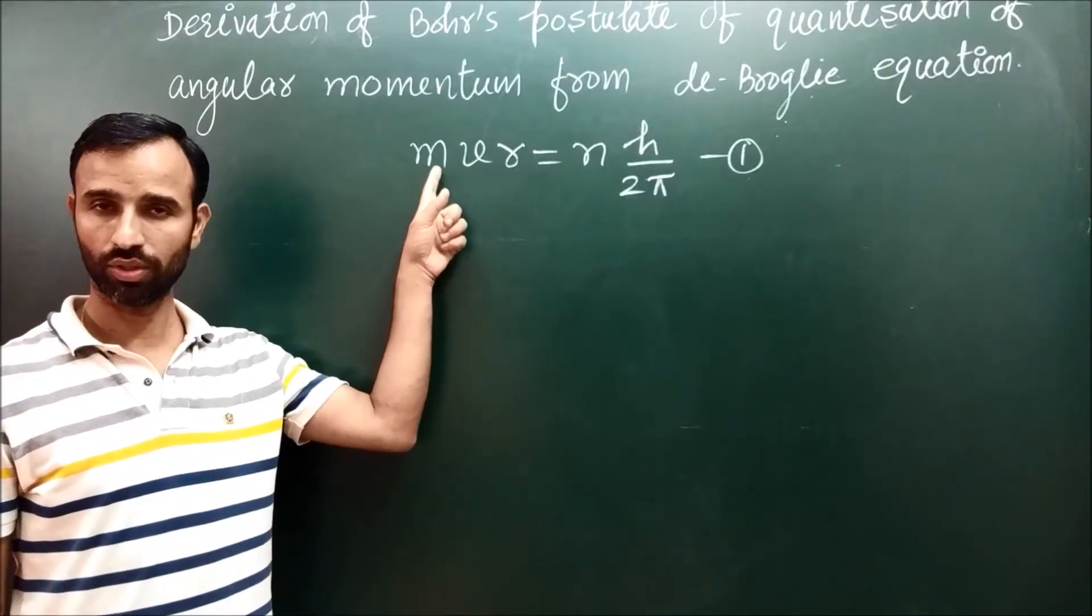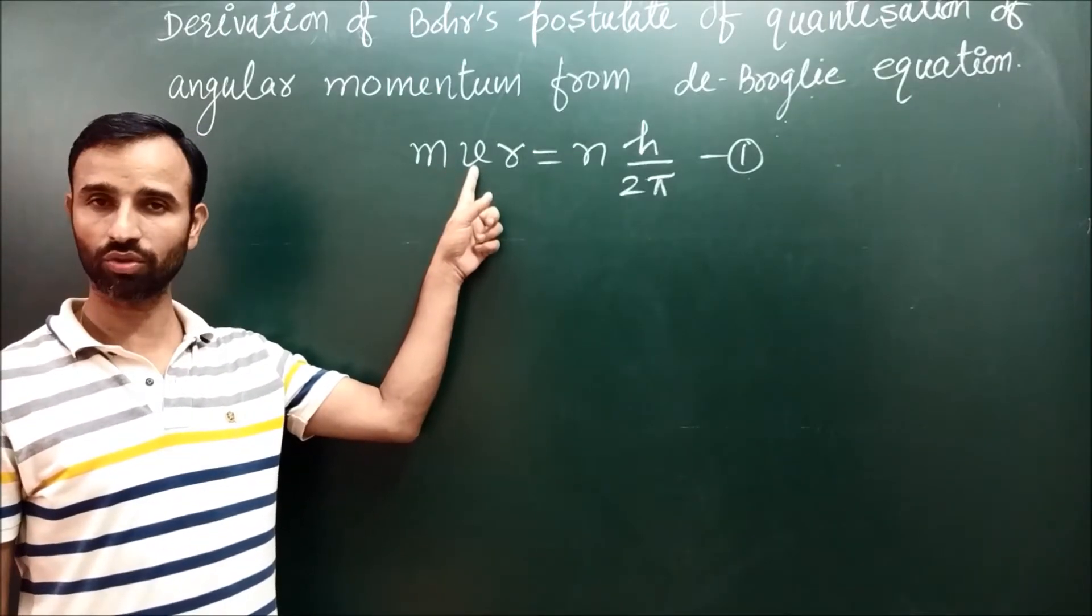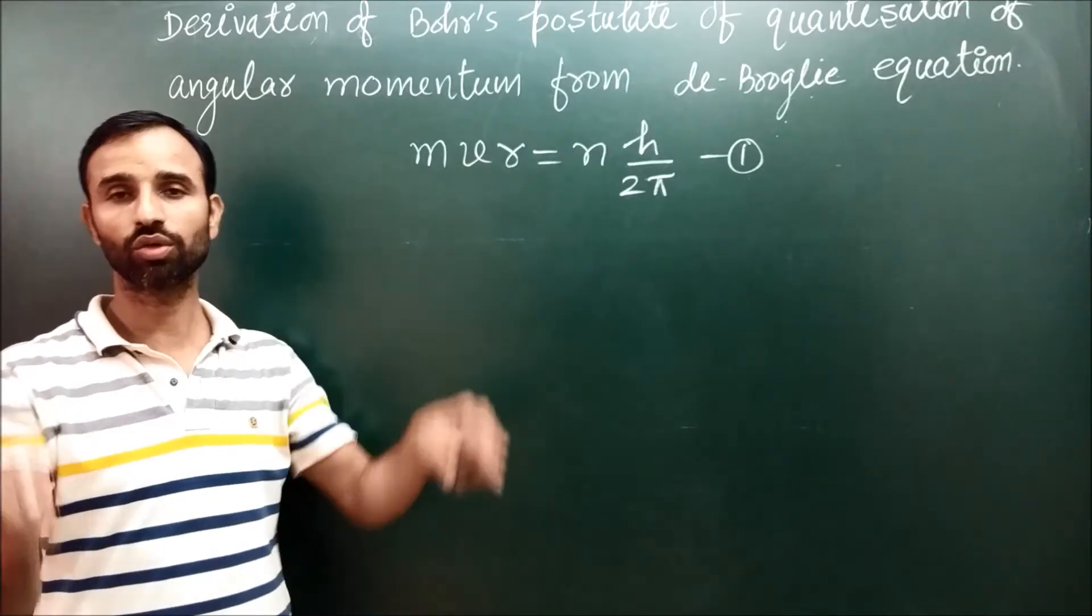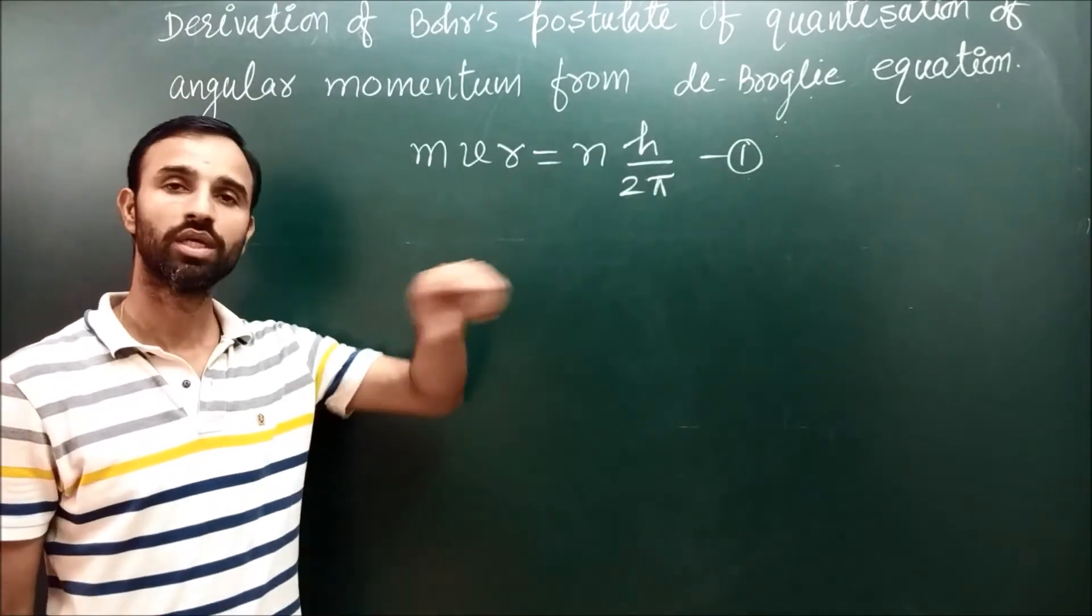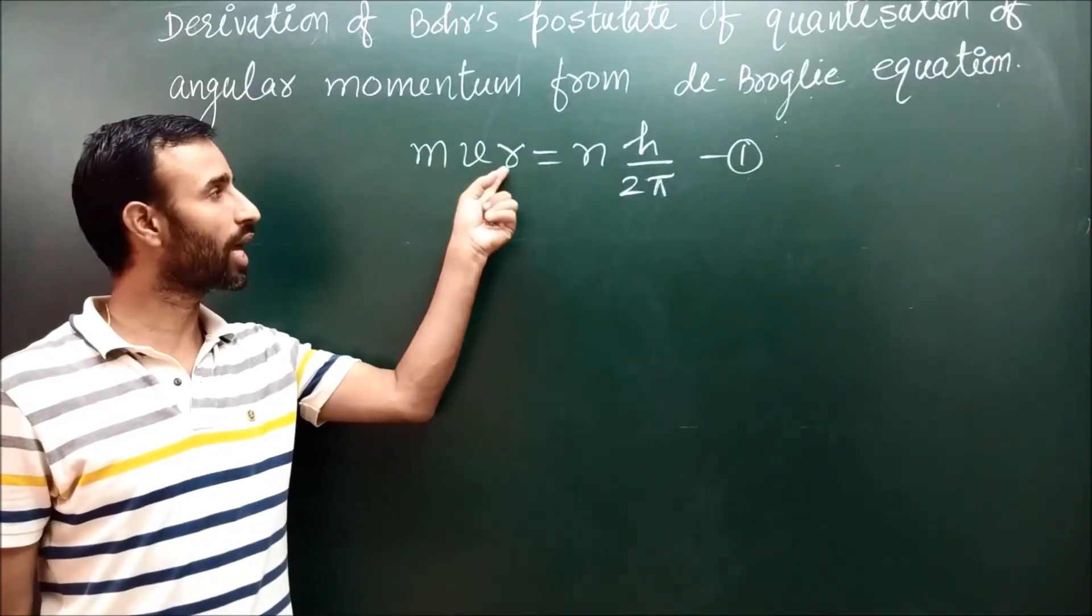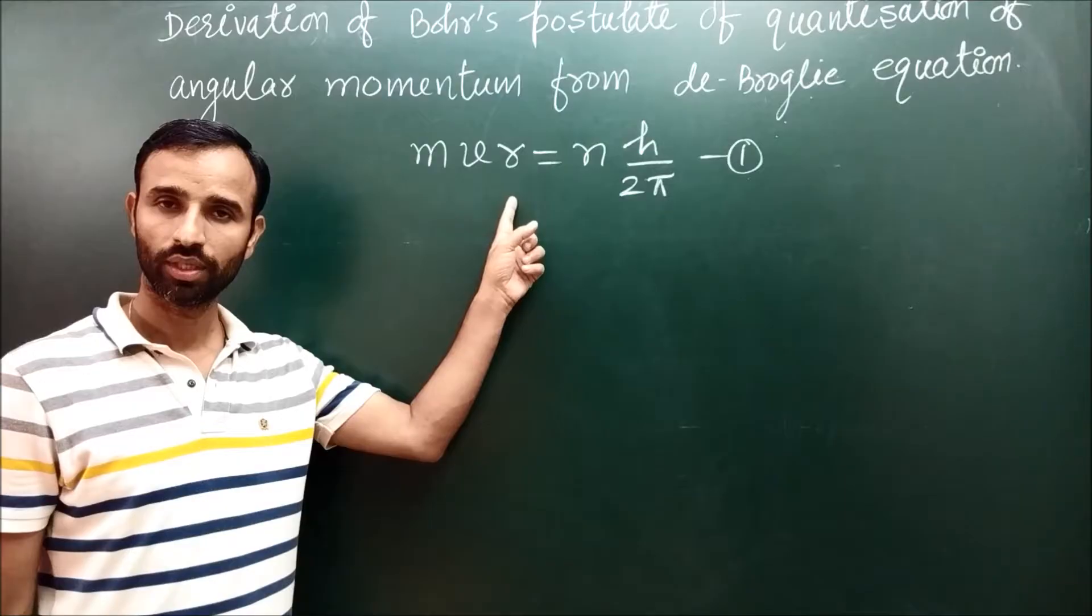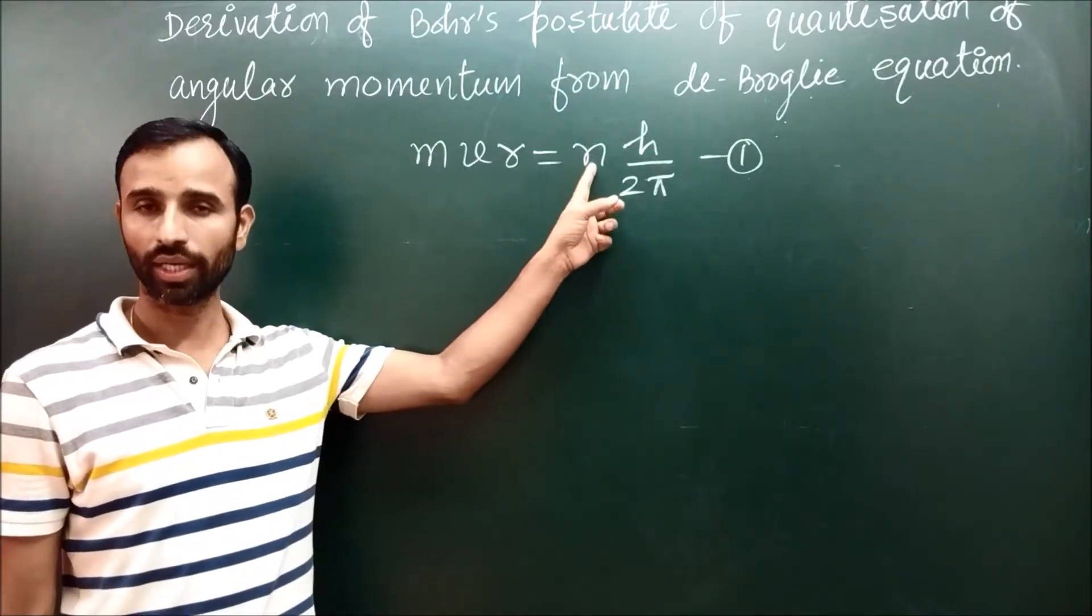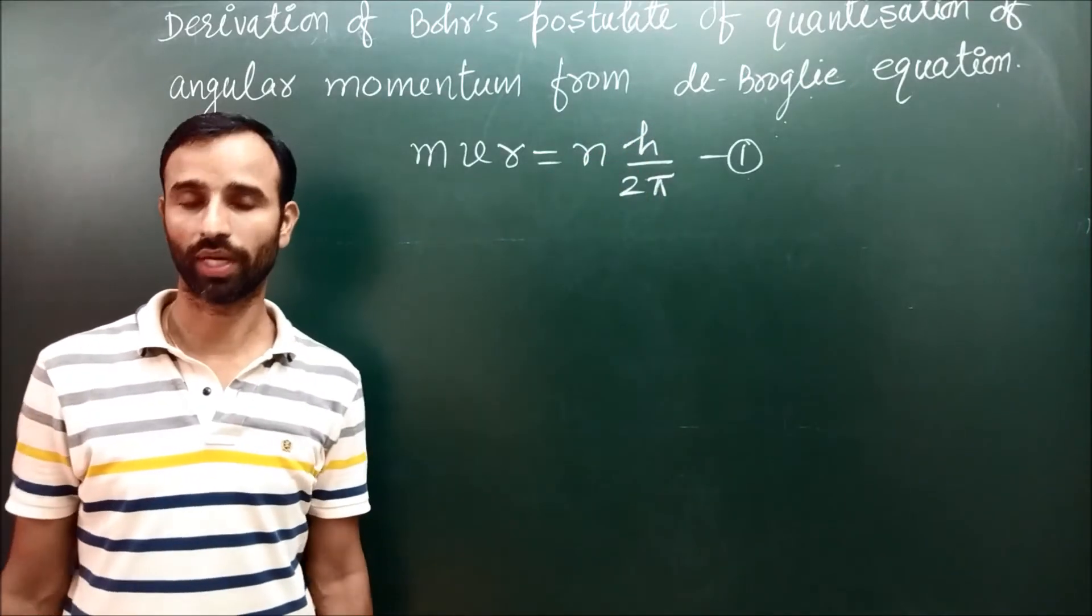M is mass of the electron, v is the velocity of the electron, and r is the radius of the orbit in which electron is circulating. This mvr is angular momentum of the electron and it should be integral multiple of h upon 2π.